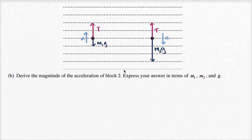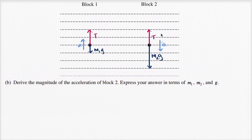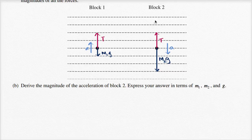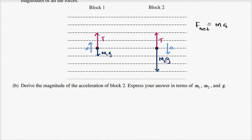They say derive the magnitude of the acceleration of block two. So this is block two up here. And we know from Newton's second law that if we pick a direction — and the direction that matters here is the vertical direction, since all the forces are acting either upwards or downwards — the magnitude of our net forces in the vertical dimension is going to be equal to mass times acceleration in that direction.